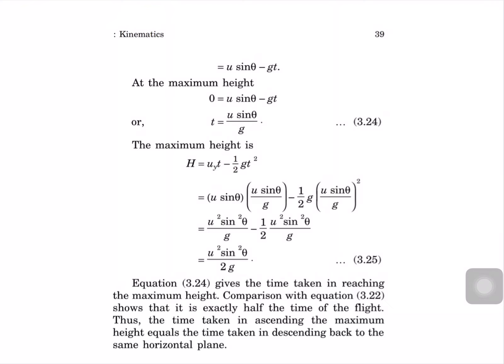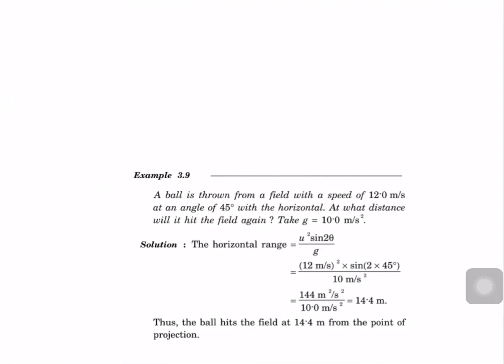The time taken to reach maximum height is exactly half the time of flight. Thus time taken ascending equals time taken descending back to the same horizontal plane. For a sample problem: a ball is thrown from a field with a speed of 12 m/s at an angle of 40 degrees with the horizontal. Using R equal to U² sin 2 theta by g with g equal to 10, the range comes out to 14.4 meters.